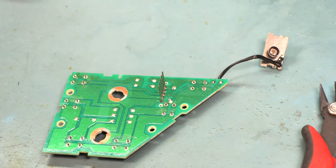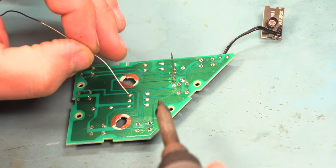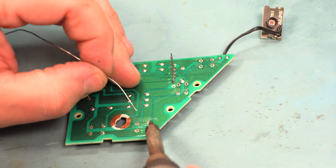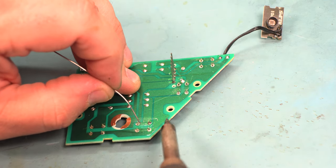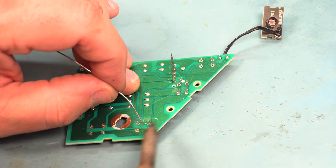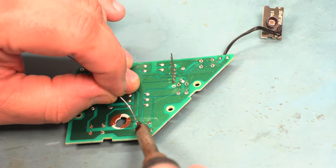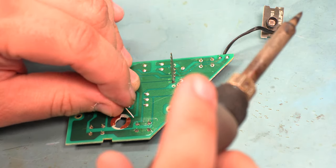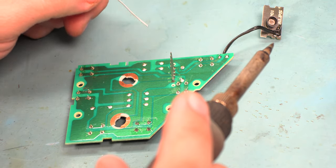Next we'll take some fresh solder and solder those switches in place. We'll apply heat to the junction between the pad and the pin of the switch. We'll feed in a small amount of fresh solder. And then we'll remove the heat. We'll do that for each of the other four legs. And we'll do that for each of the other five switches.